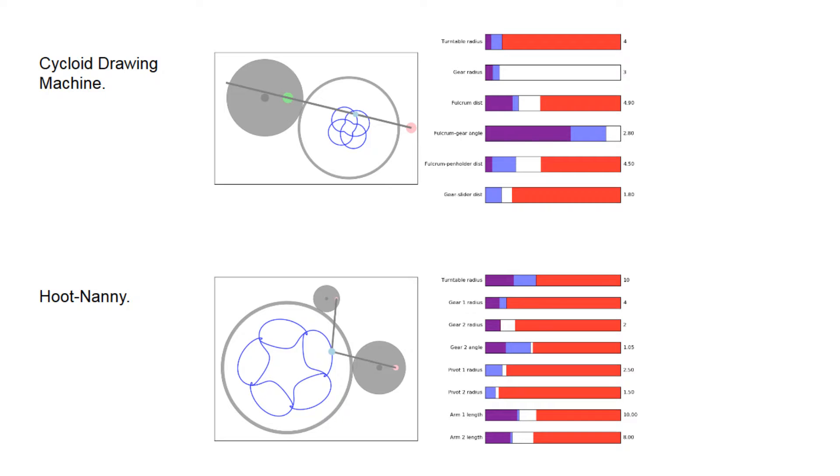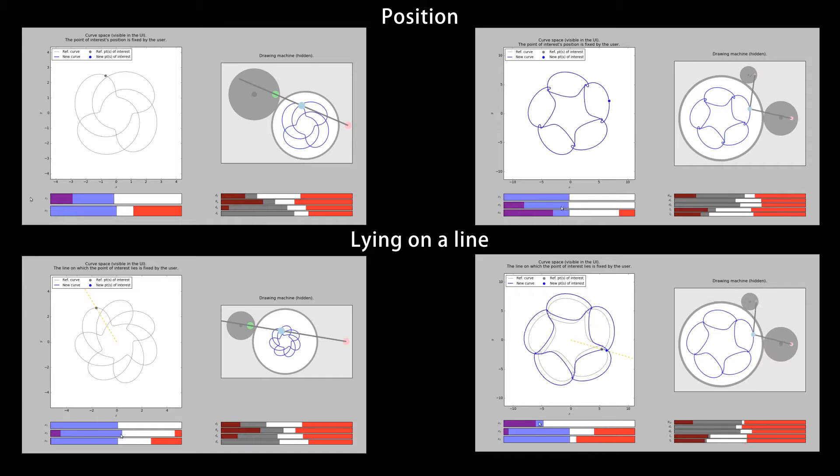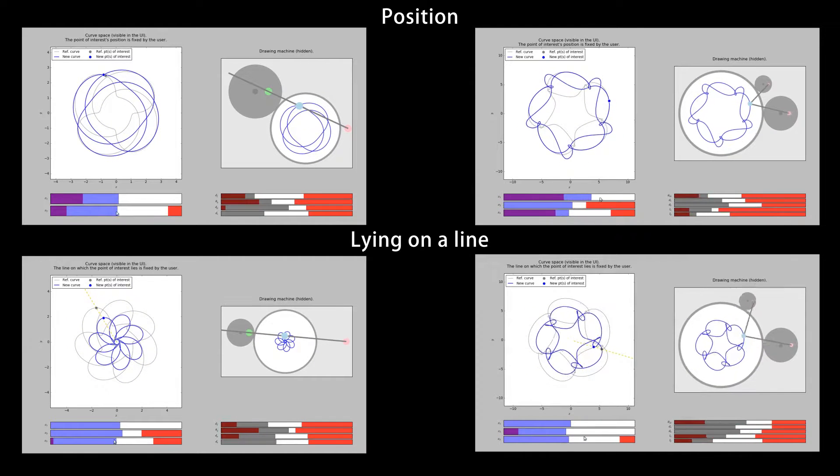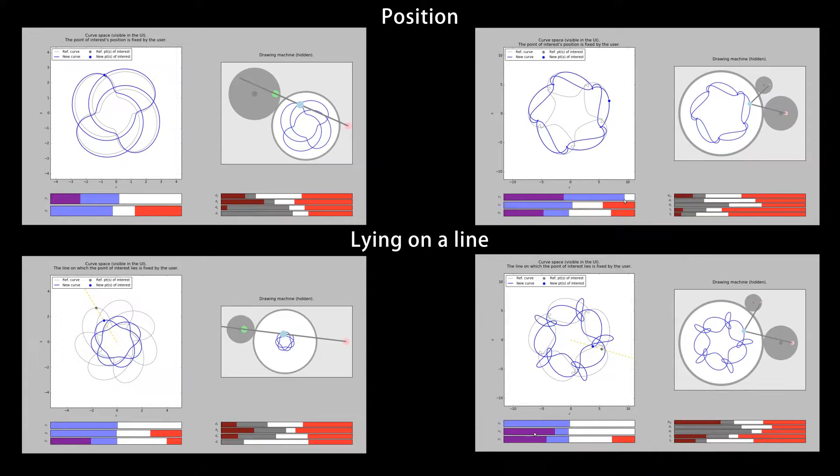Here are results with more complex machines. This time, we show the corresponding mechanism in the right panel. The curve is projected on the invariant space when the slider is released.